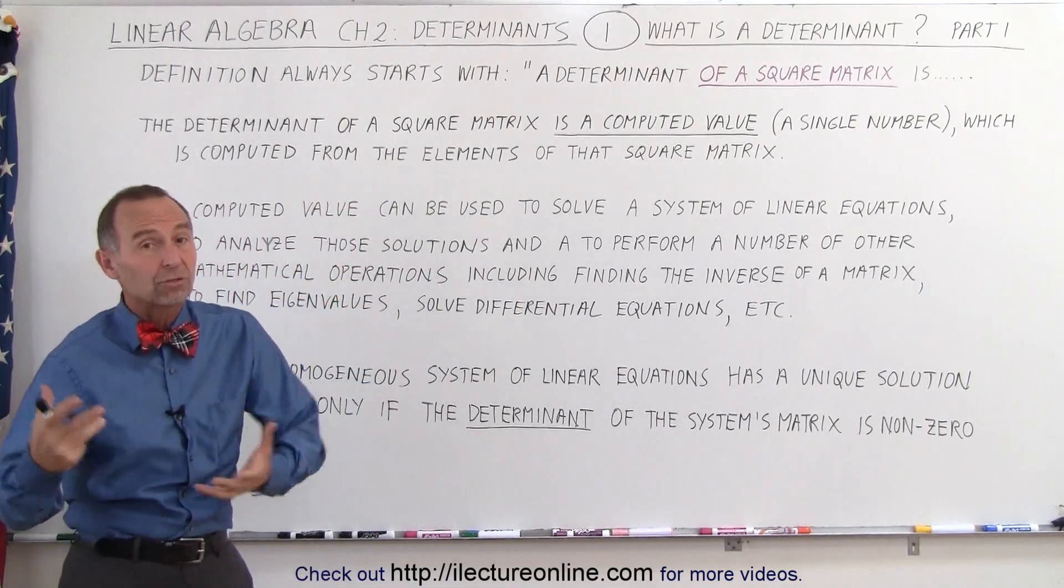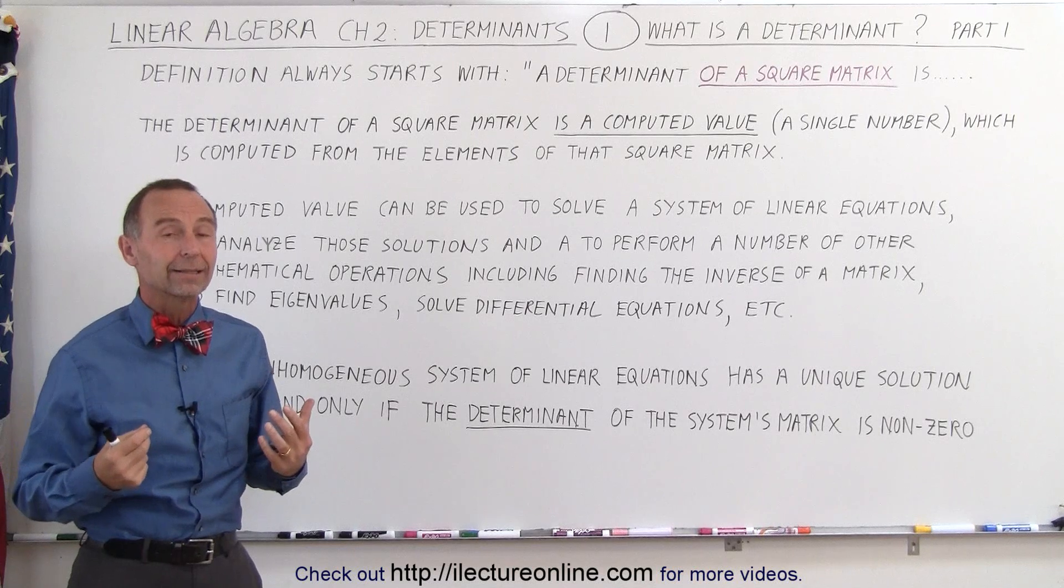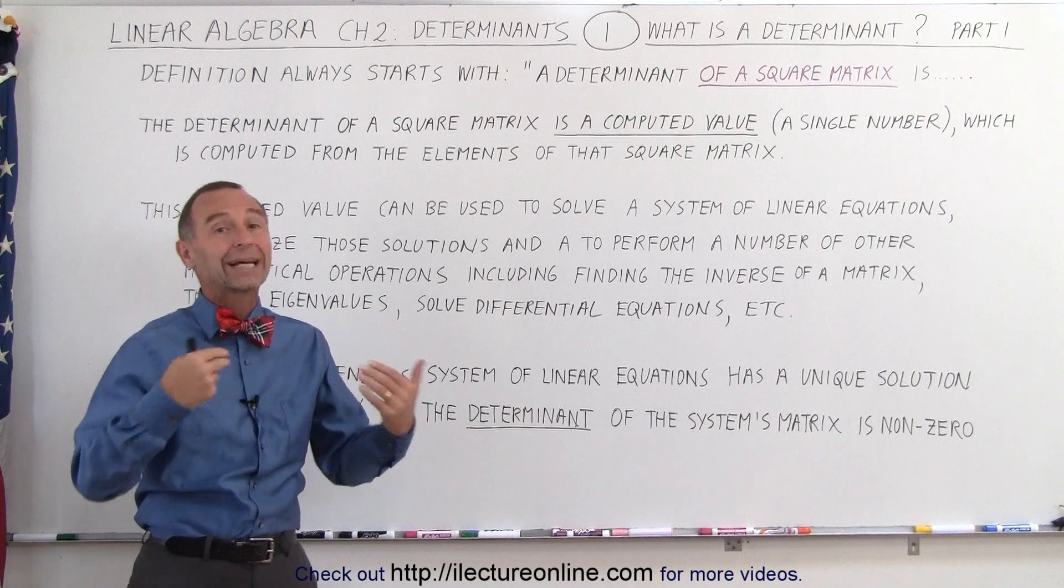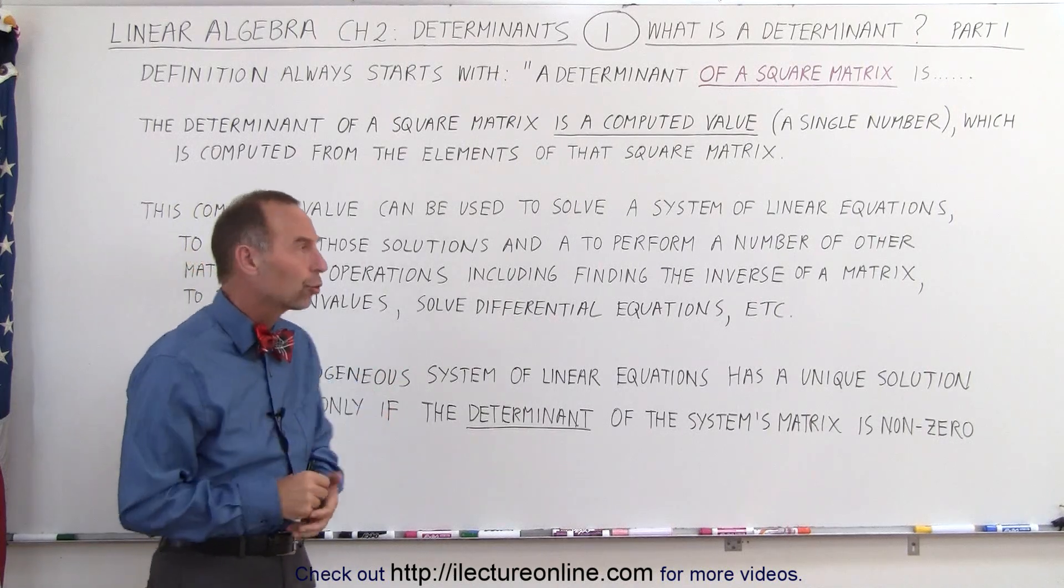So you take the elements of a square matrix, you do some sort of operation on it, and you get a single number, and that's what we call taking the determinant or calculating the determinant of a square matrix.